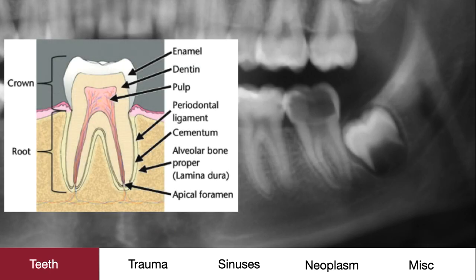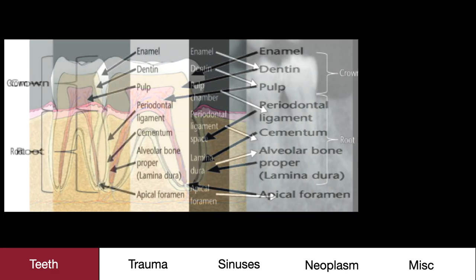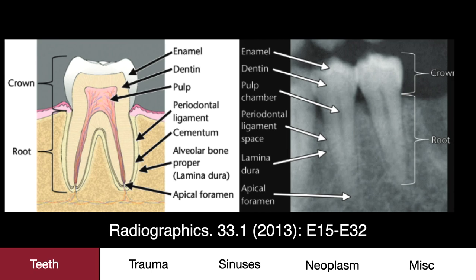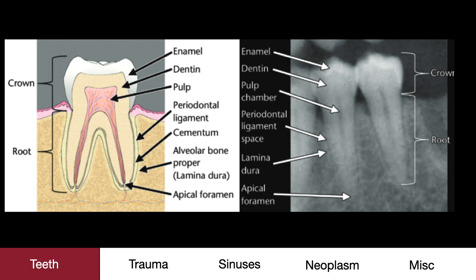This is an example of really bad dental caries. Not surprisingly, the patient was in a lot of pain. As a refresher, the pulp chamber carries the neurovascular bundle of the tooth. When there's infection, the pressure within the pulp chamber increases, causing significant pain.